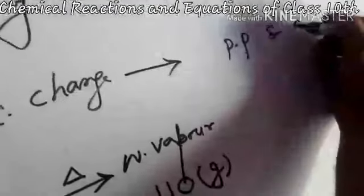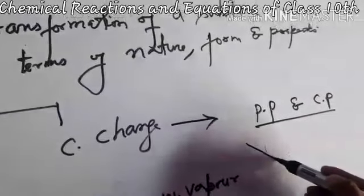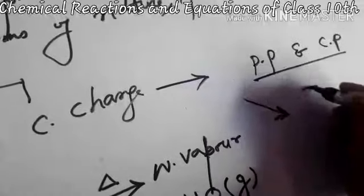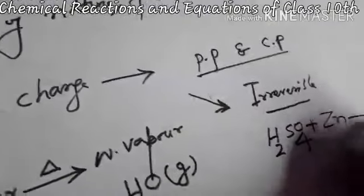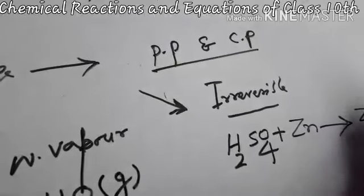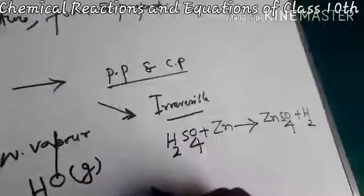In chemical changes, chemical properties are entirely different, and chemical changes are usually or generally irreversible. Irreversible means if H2SO4 reacts with Zn, it will form ZnSO4 plus H2, but ZnSO4 plus H2 cannot react back to form the original reactants. Chemical changes are usually irreversible.